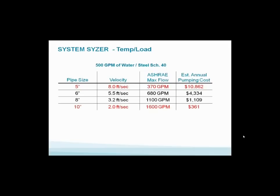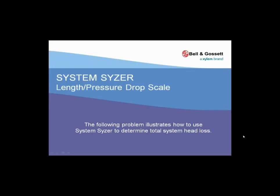It's real simple. We picked a six-inch pipe at five and a half feet per second, max allowable ASHRAE flow rate 680 GPM. We've got an estimated cost of $4,334 per year. Look what happens if I cut the pipe from six to five - I doubled the operating cost. Going from six-inch pipe to five, one pipe size reduction, I doubled the annual pumping cost. That's pretty important, and the system sizer will show you that.